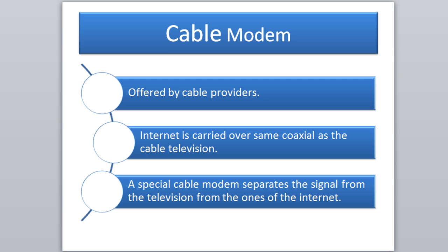Since cable modem shares the same coaxial line as your TV, you might expect that to be slow — and you'd be right. It's not as slow as dial-up, but if you're trying to pull up a YouTube video and you have three TVs going in the house, you're going to notice it's slower. You can tell something else is happening on the network, which is a drawback of cable modem.